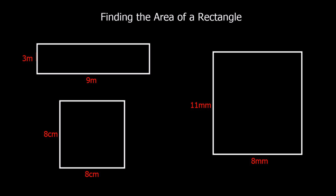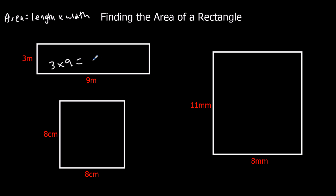Pause the video and see if you can try these questions. So, this one at the top, we've got three times nine. Remember, area of a rectangle is length times width — you could say base times height, but we'll say length times width. Three times nine is twenty-seven metres squared.